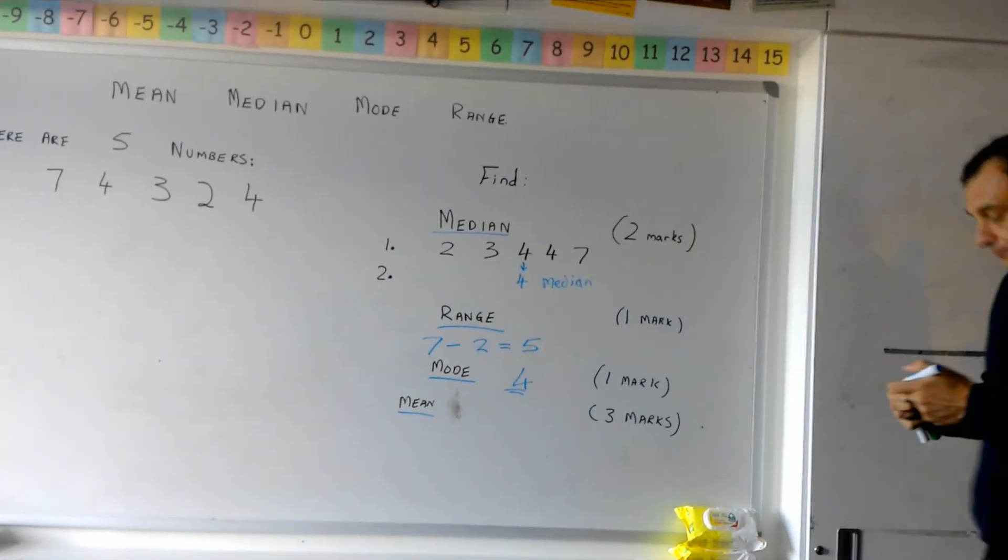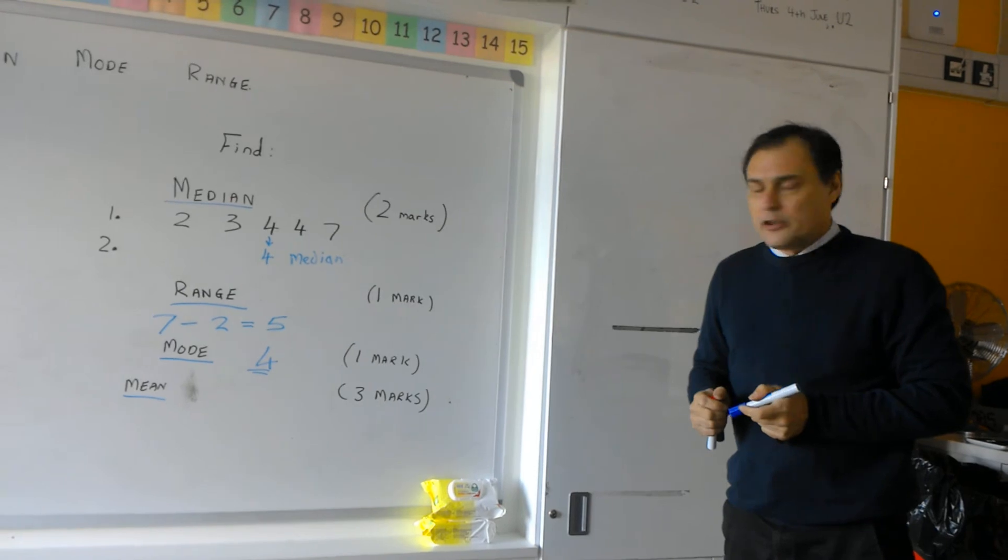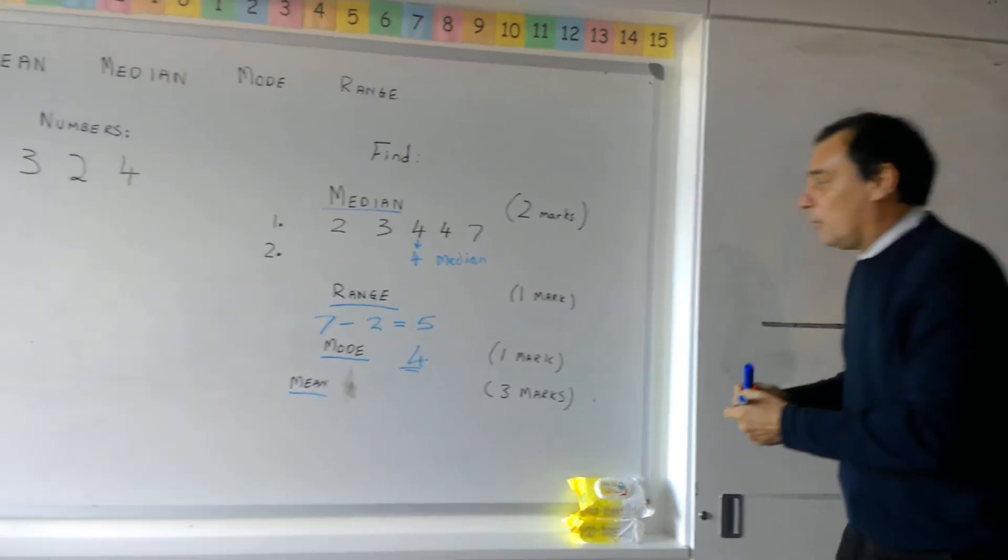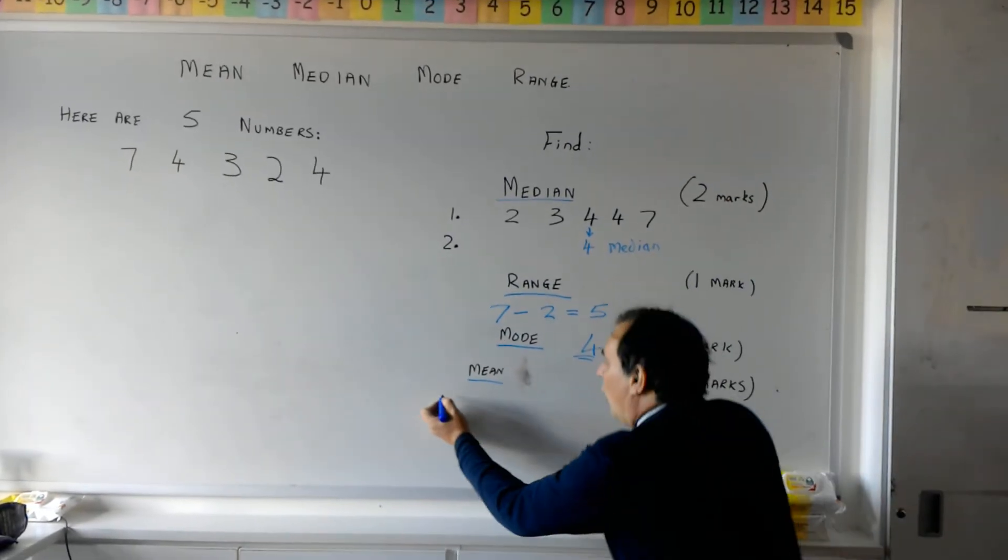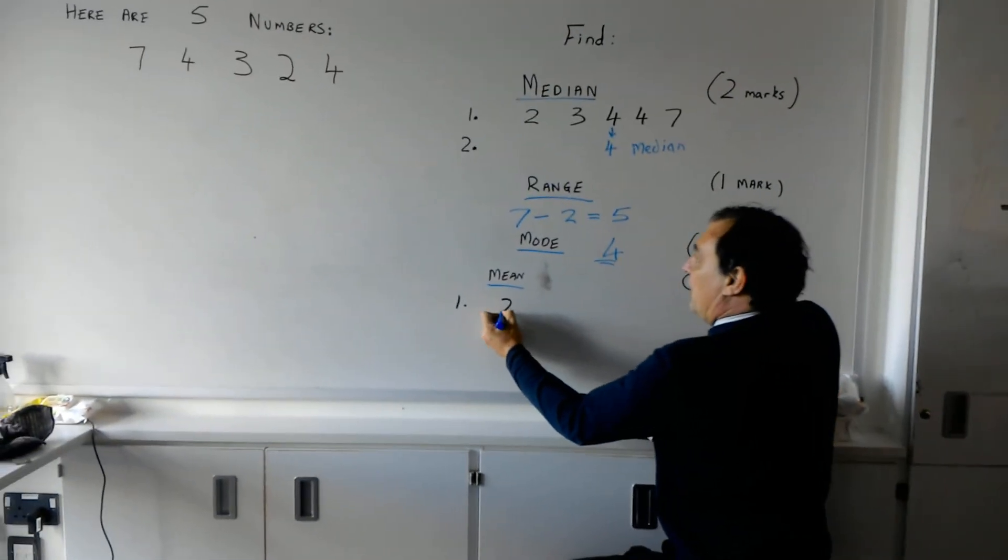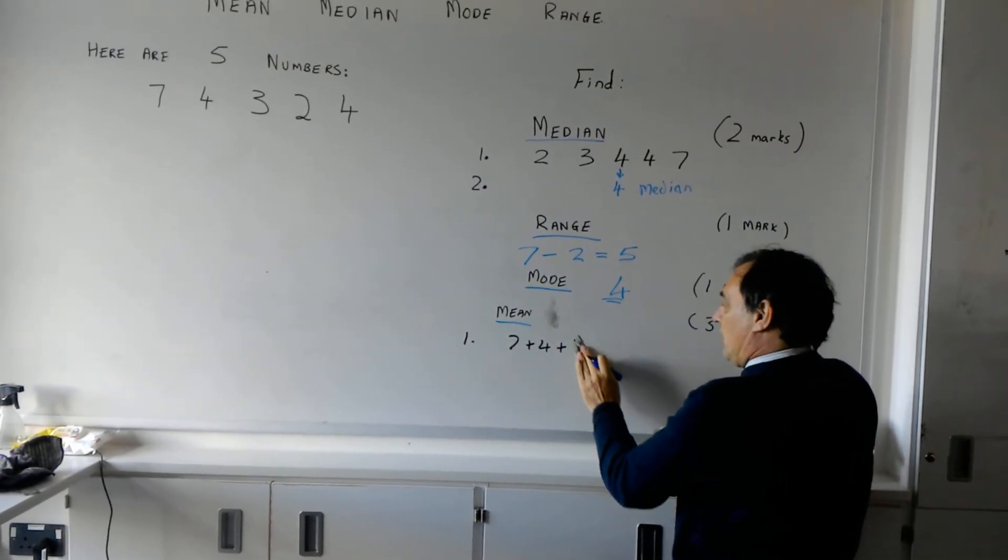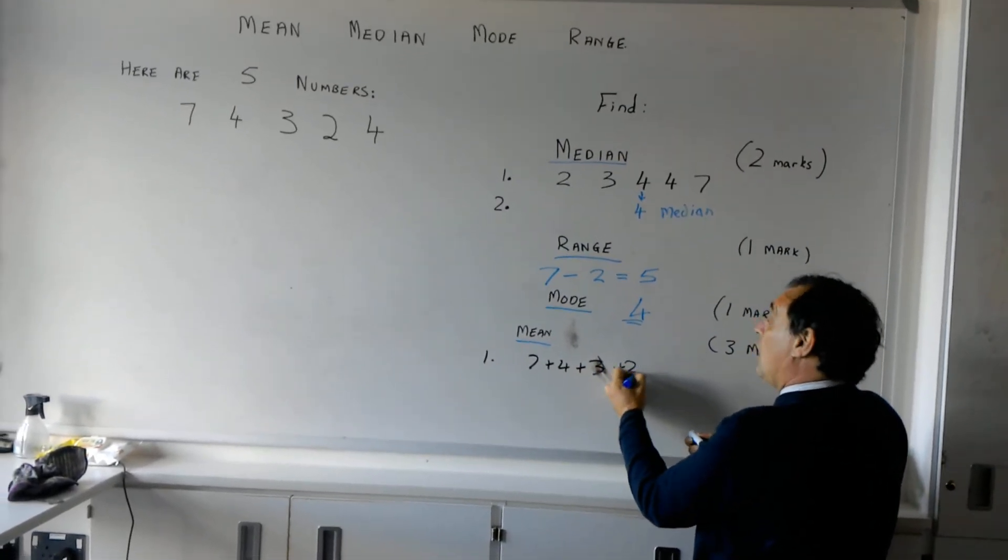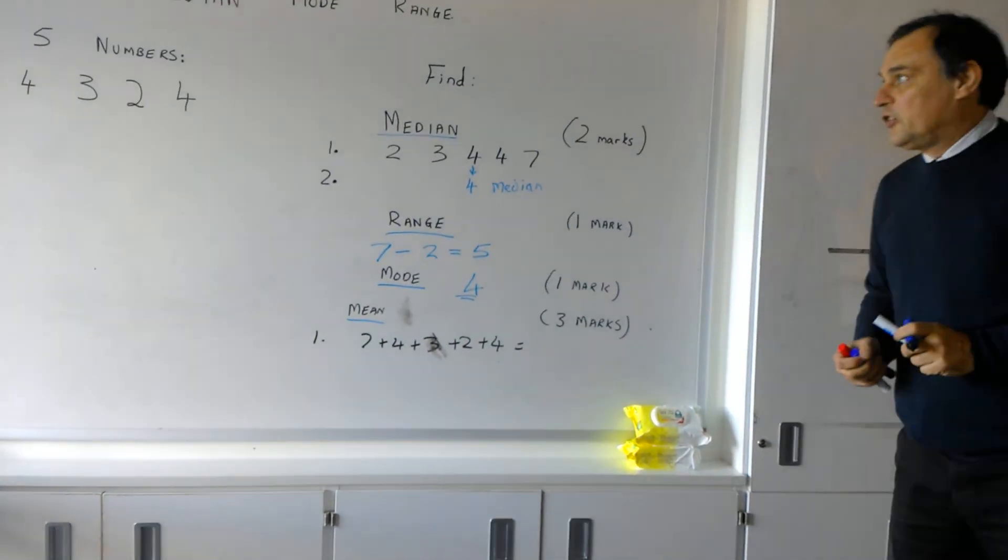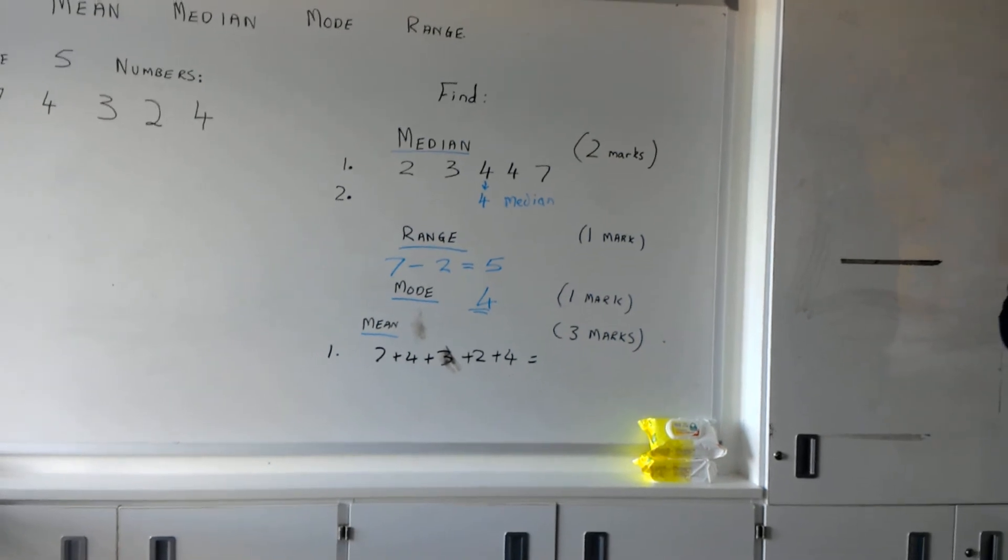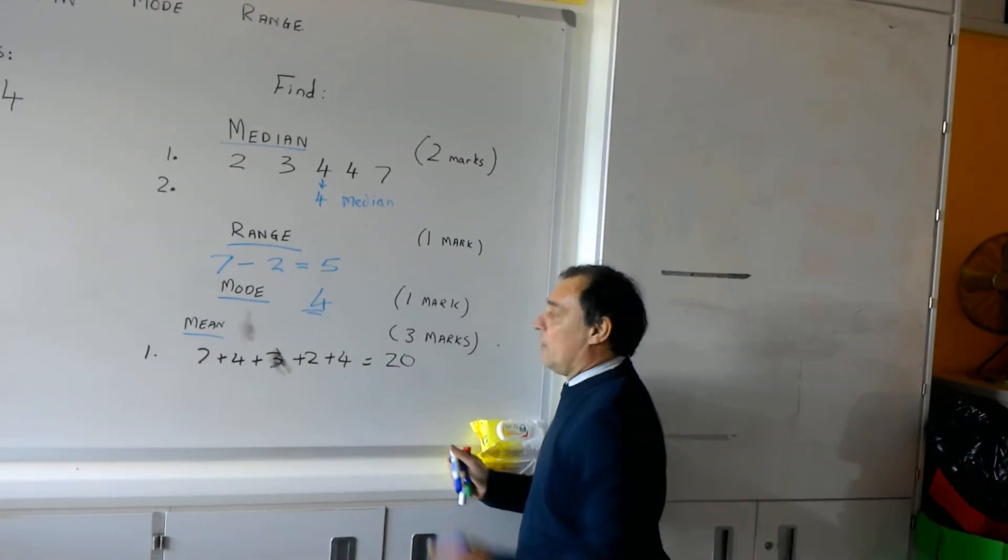Now the mean. The mean. How many marks have we got for the mean? Three. How many jobs have we got to do then? Three jobs. Okay. So job number one is we've got to add all the numbers together. So seven plus four plus three plus two. Oops. I've got to do the three there. Plus two plus four. If you add those numbers together. Have we got a genius here who could tell me what all of those numbers are? Twenty. Gosh. Sharp. Very sharp. So we can add them all up. We've got twenty.